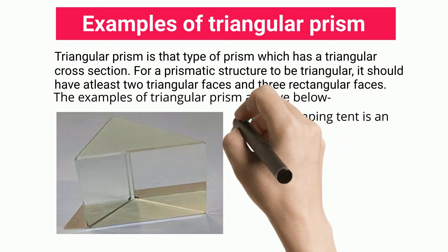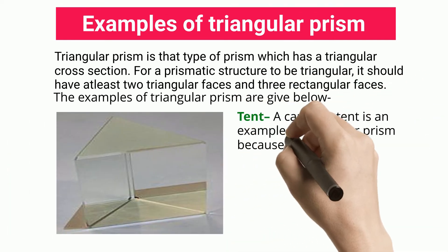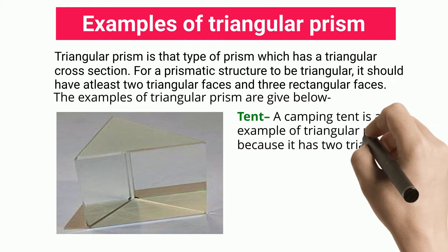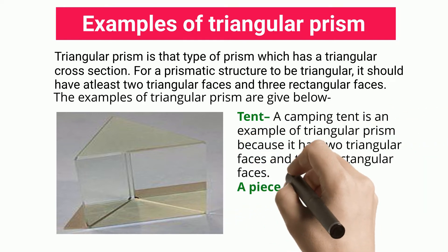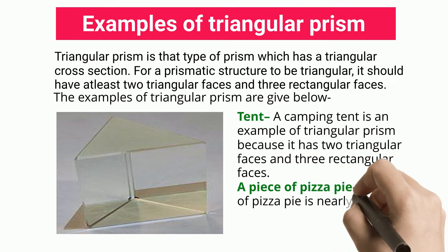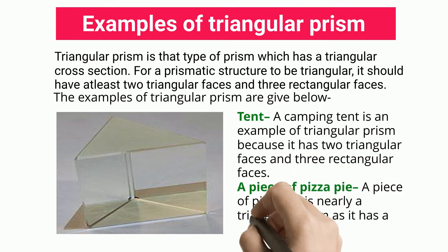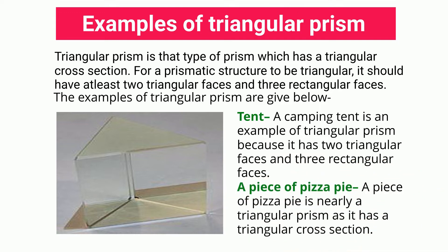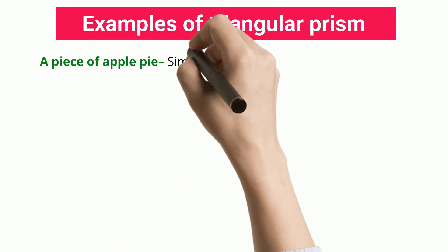Tent: a camping tent is an example of a triangular prism because it has two triangular faces and three rectangular faces. A piece of pizza pie: a piece of pizza pie is nearly a triangular prism as it has a triangular cross-section.